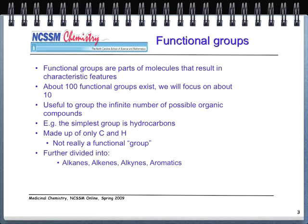We divide hydrocarbons, as you've already seen, into alkanes, alkenes, alkynes — triple bond — and aromatics. We also have the cyclic or cyclo-compounds. Aromatics are mostly those compounds that have benzene rings in them, and we'll talk about those later in this discussion.